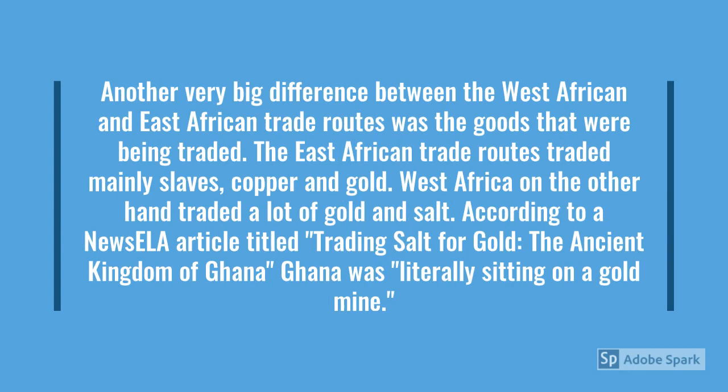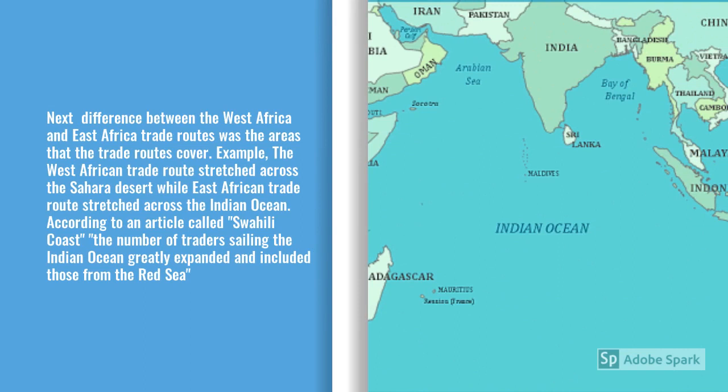For the next big difference between the West African and East African trade routes, we have the goods that were being traded. On the East African trade route, they traded mainly slaves, copper, and gold, while on the West African trade route they traded a lot of gold and salt. According to a NewsELA article titled 'Trading Salt for Gold,' the ancient Kingdom of Ghana was literally sitting on a gold mine.